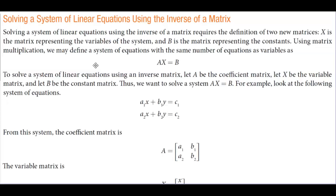X is the matrix representing the variables of the system, and B is the matrix representing constants. Using matrix multiplication, we may define a system of equations with the same number of equations as variables as matrix A times matrix X, which is equal to matrix B.